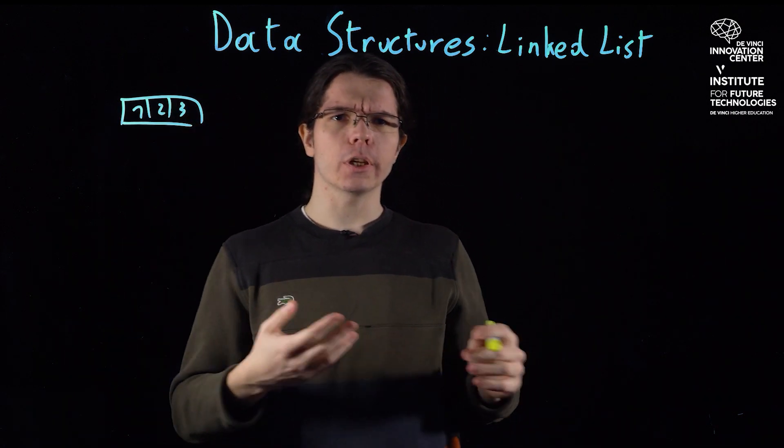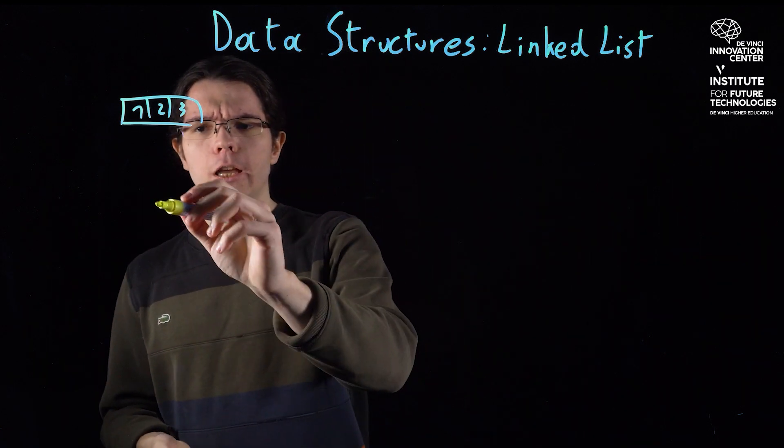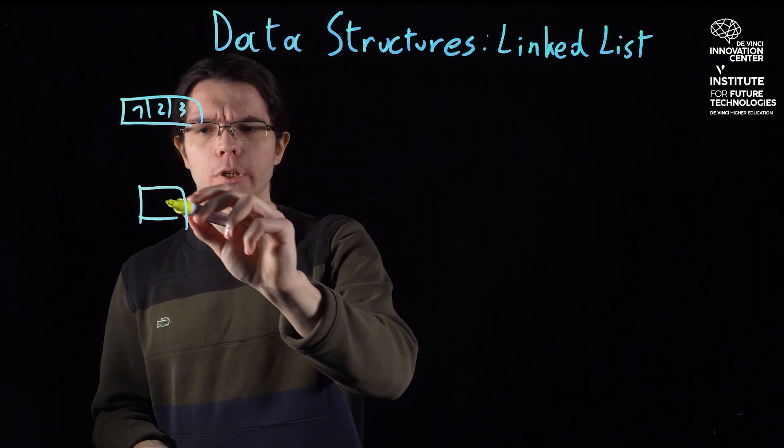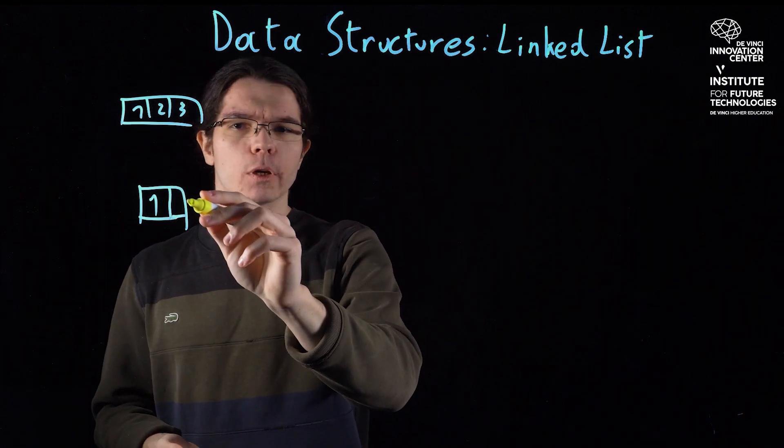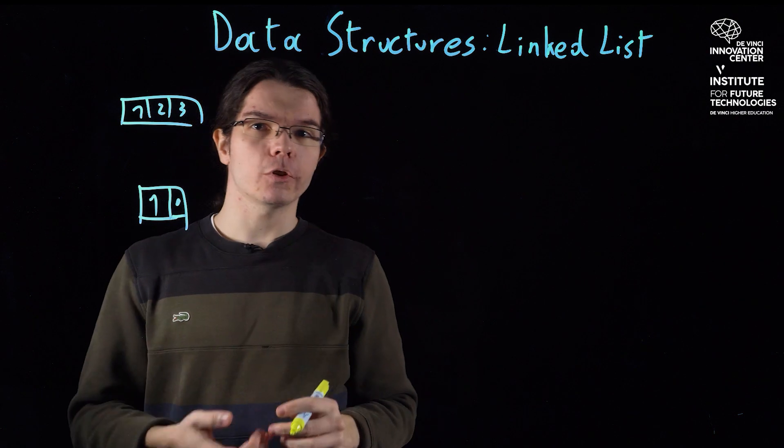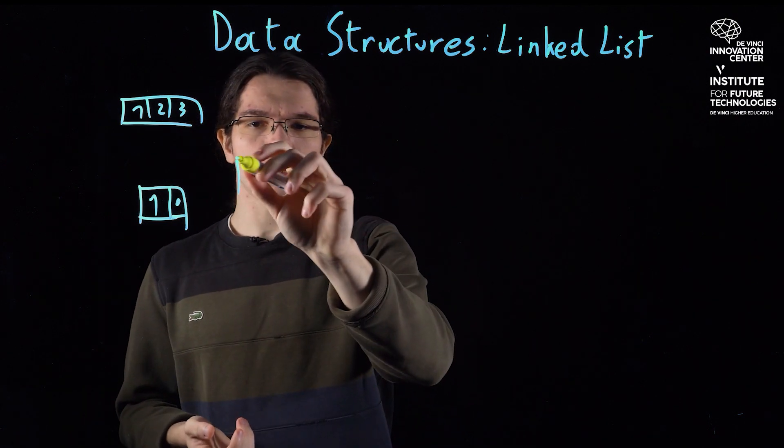So, how can we do that? The answer would be, for example, I can actually have a first element, like 1, and I can also just add at the end of my 1 another element, which is a pointer to the next element of the list.